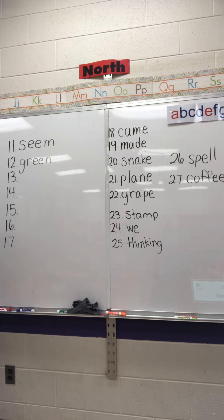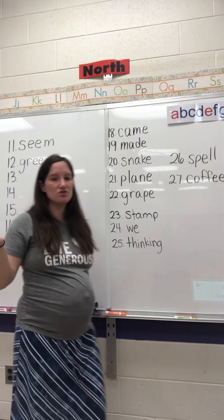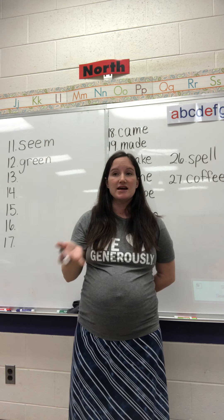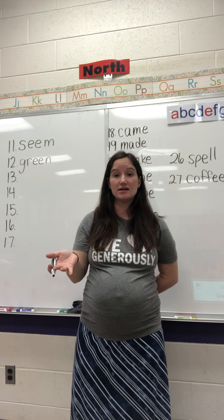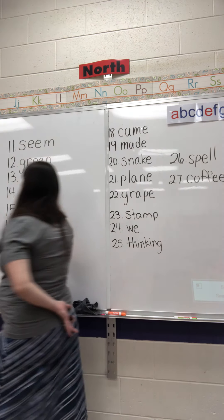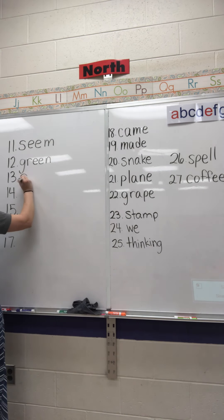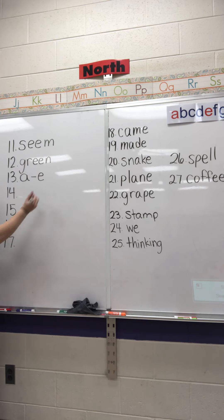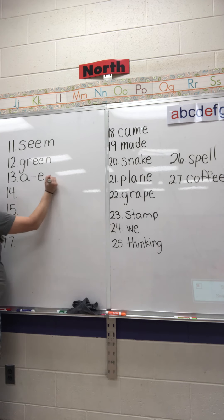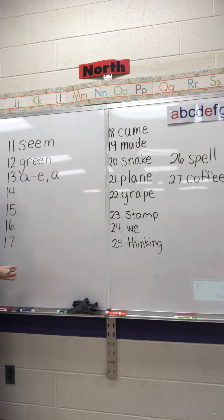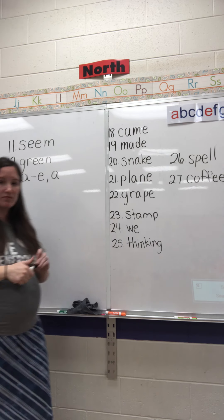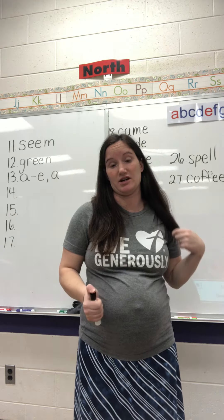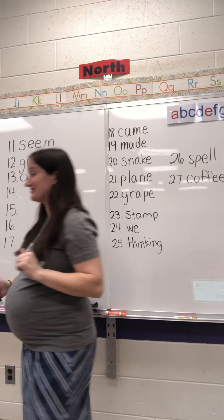For number 13, you're just going to write the new concept. The new concept is A-consonant-E, and then what sound does it make? Right, it says A. So you're going to write 'A consonant E,' and then write comma A. Remember, you can pause this video anytime you need to if I'm going too fast for you.